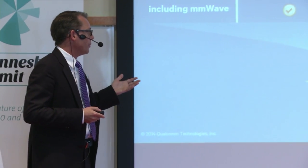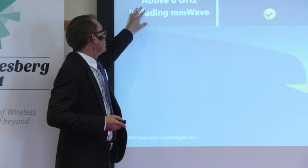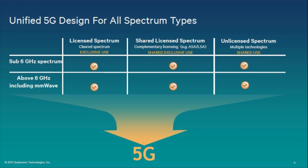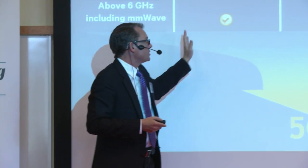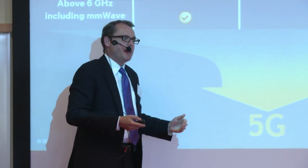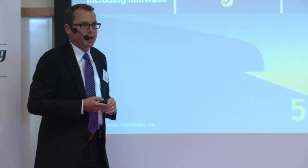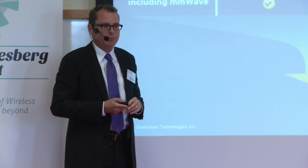On spectrum, in addition to sub-6 GHz spectrum, we want to address licensed spectrum, unlicensed spectrum, and in the middle, shared licensed spectrum. It's important that we fully leverage all possible spectrum types in the 5G design — including spectrum above 6 GHz and millimeter wave. By taking an overall approach to targeting spectrum, we can have the most unified 5G design that enables a more capable network.